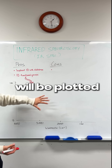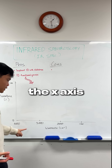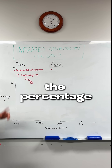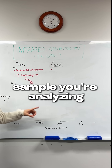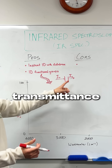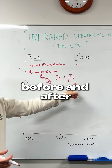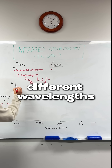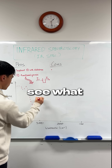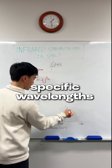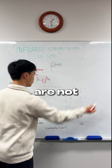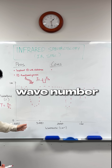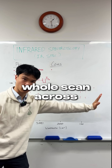In your exams, the IR Spec will be plotted on a graph like this. The x-axis is wave number, which is another way of saying wavelength. The y-axis is transmittance, which is the percentage of light which passes through the sample you're analyzing. The procedure involves finding transmittance by comparing intensity before and after light passed through a sample at a specific wavelength. By testing at all the different wavelengths represented as wave numbers, we start to see which specific wavelengths are absorbed and which ones are not — a computer generates the whole scan across.